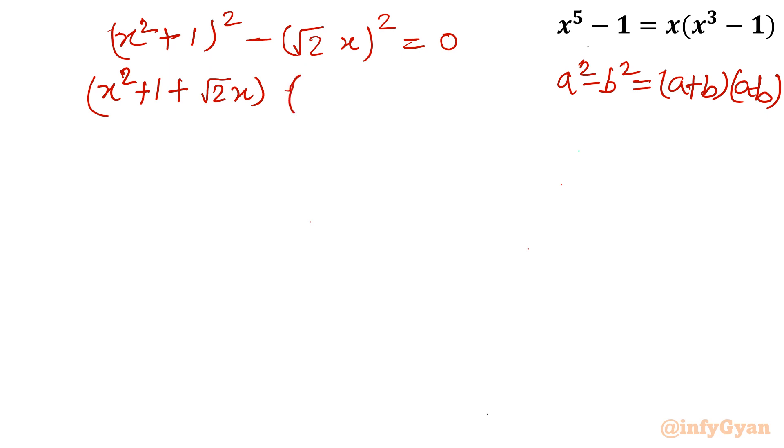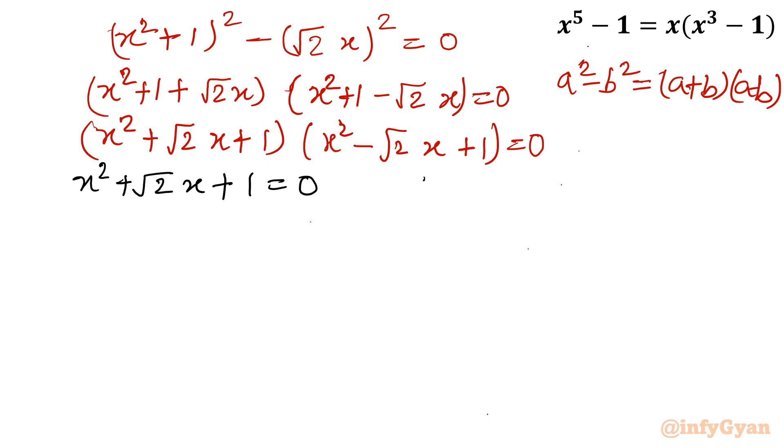So I can write (x^2 + 1 + √2 x)(x^2 + 1 - √2 x) = 0. Let us arrange in proper order so that Sridharacharya formula we can apply easily. Now let us consider the first quadratic: x^2 + √2 x + 1 = 0. And second: x^2 - √2 x + 1 = 0.